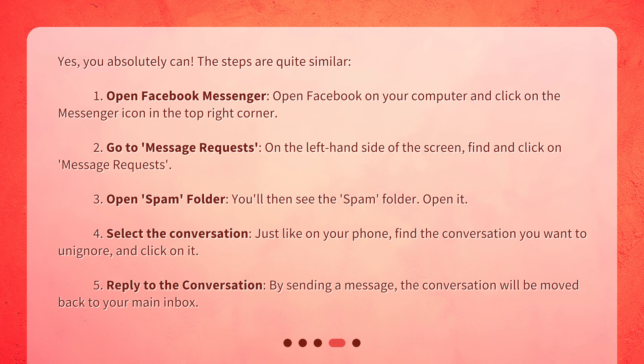Step 3: Open the Spam folder. You'll then see the Spam folder — open it. Step 4: Select the conversation. Just like on your phone, find the conversation you want to unignore and click on it. Step 5: Reply to the conversation. By sending a message, the conversation will be moved back to your main inbox.